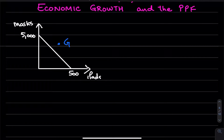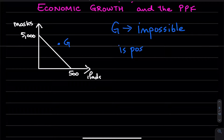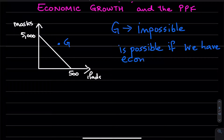But getting to a point like G becomes possible — a point G was impossible before, but getting to a point like G is possible if we have economic growth.